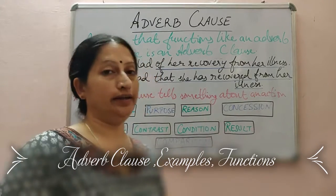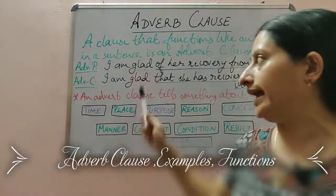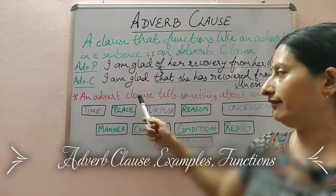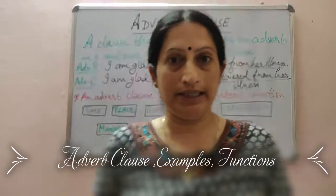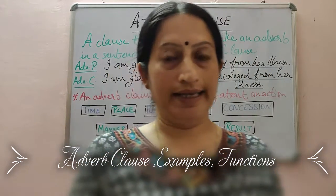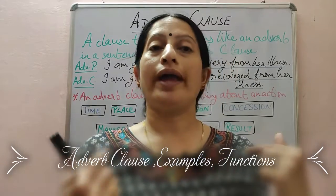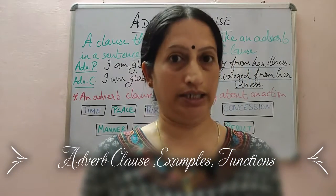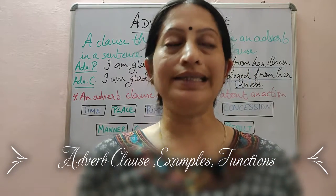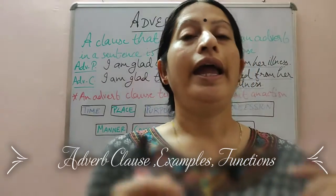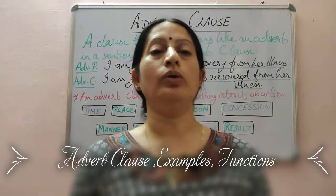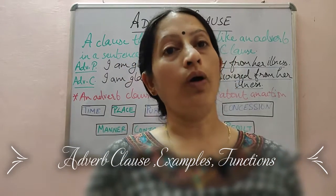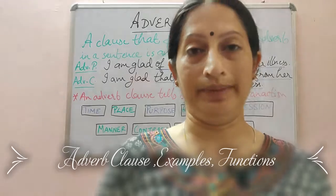So I hope you have understood the difference between adverb clause and adverb phrase. An adverb clause tells something about an action — the verb in a sentence tells you the action, so an adverb clause is a part of the sentence that tells you about the action, which is generally done in the main clause. An adverb clause can also tell you about an adjective, and it can also explain another adverb in the sentence.